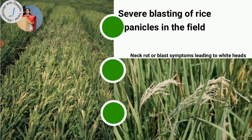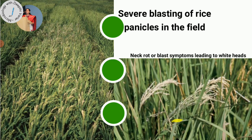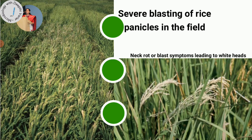This leads to severe blasting of rice panicles. Neck blast symptoms involve the neck of the plant rotting, which is one of the most destructive stages of the disease, emerging because of the infected collar. Based on which part of the rice plant is affected, the names keep changing - it is called collar rot, neck blast, and so on.